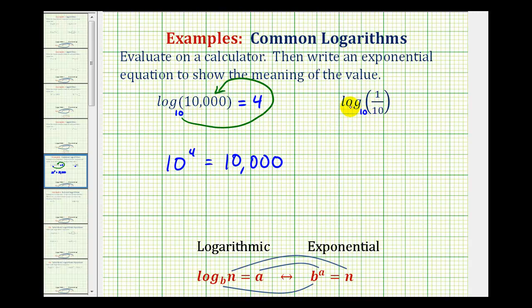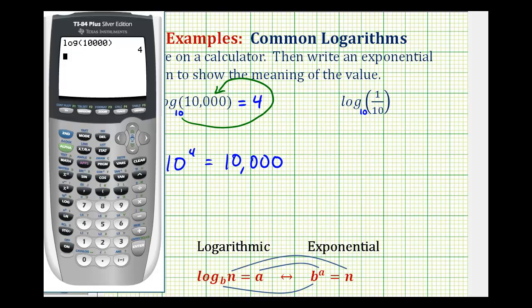Now we have the common log of one-tenth, so we'll go back to the calculator. Press the log key, which is the common log, and then one-tenth, so one divided by 10, close parenthesis, press enter. This is equal to negative one.